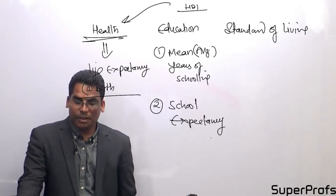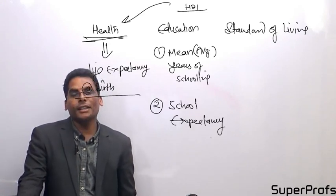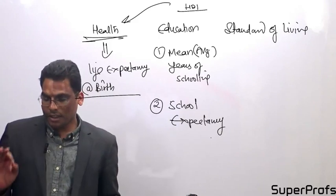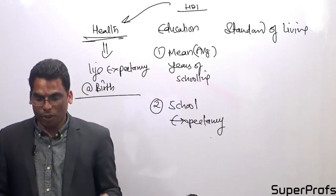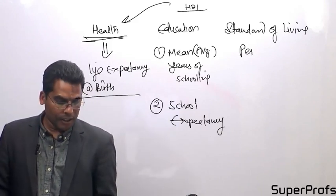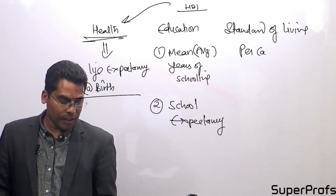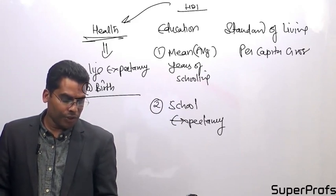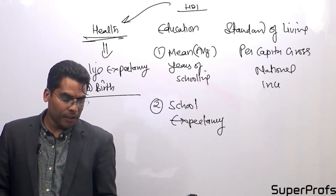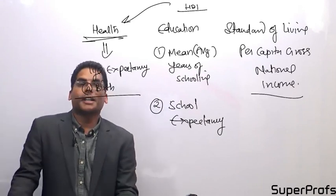Standard of living is captured by Gross National Income per capita. This is GNI per capita measured in Purchasing Power Parity — PPP. So if someone is poor they may not be able to send their kids beyond 2nd or 3rd grade, and school expectancy captures that reality.